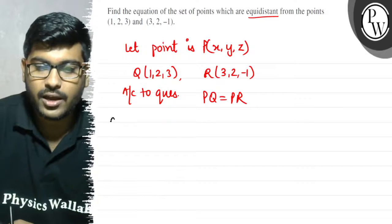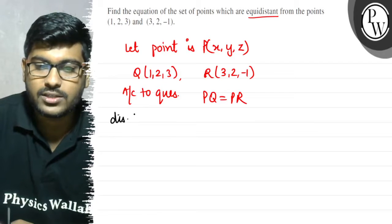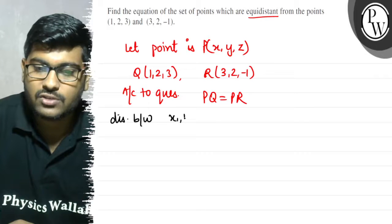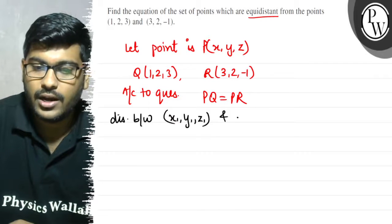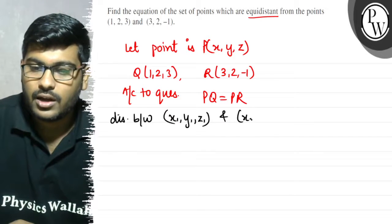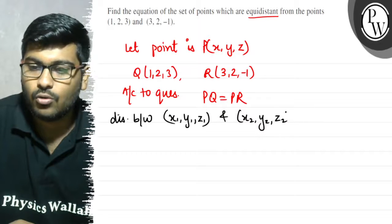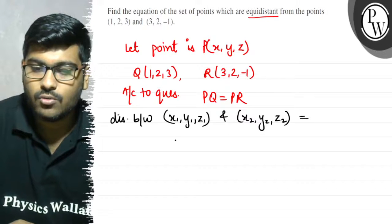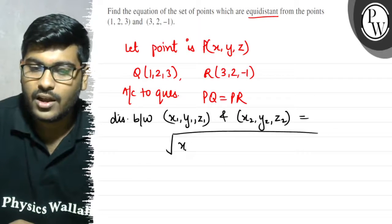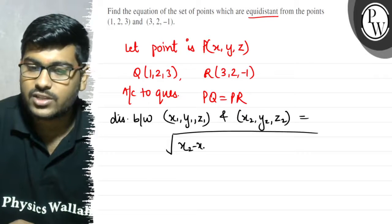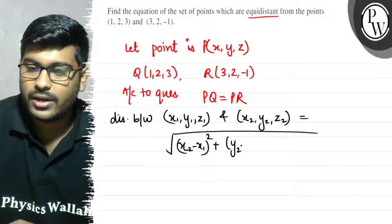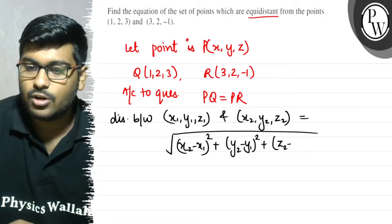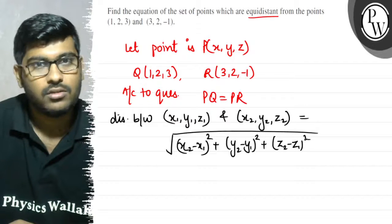We know that the distance between (x1, y1, z1) and (x2, y2, z2) is equal to the square root of (x2 - x1) whole square plus (y2 - y1) whole square plus (z2 - z1) whole square.